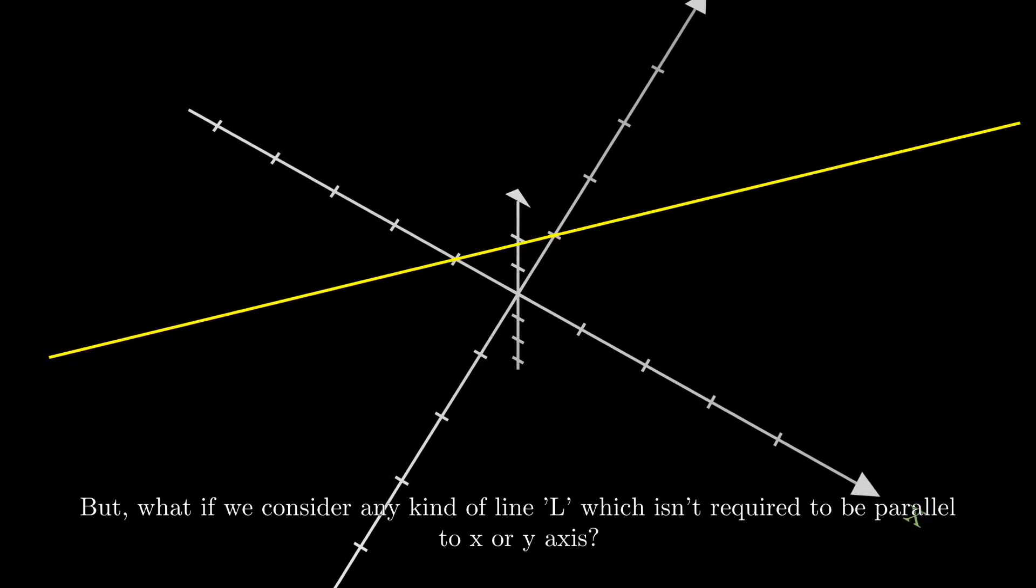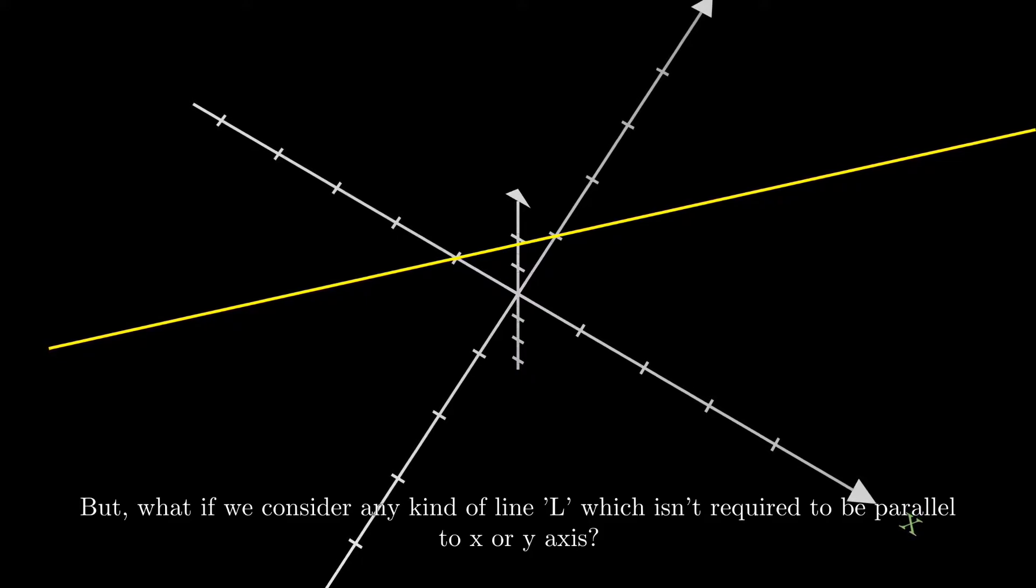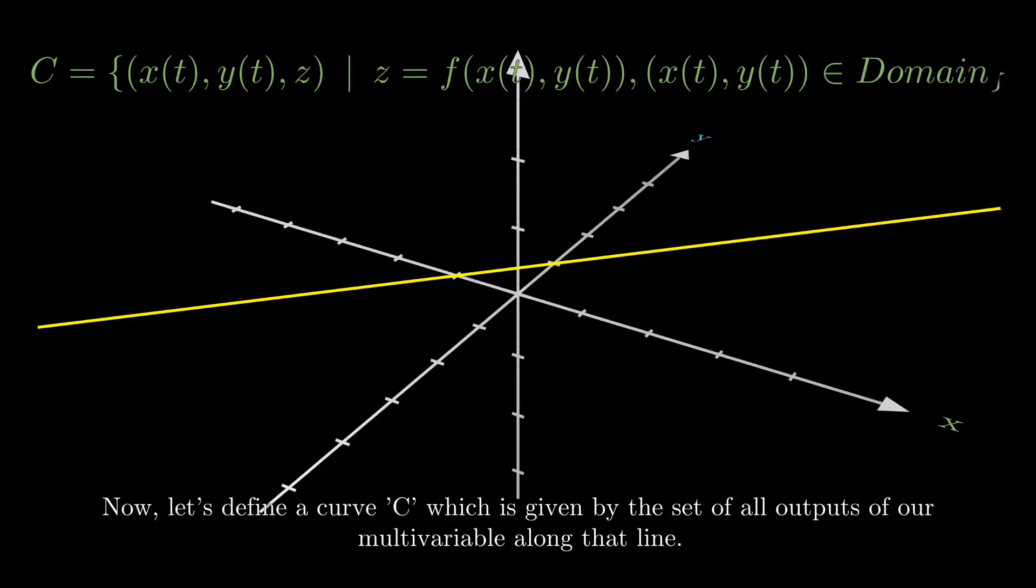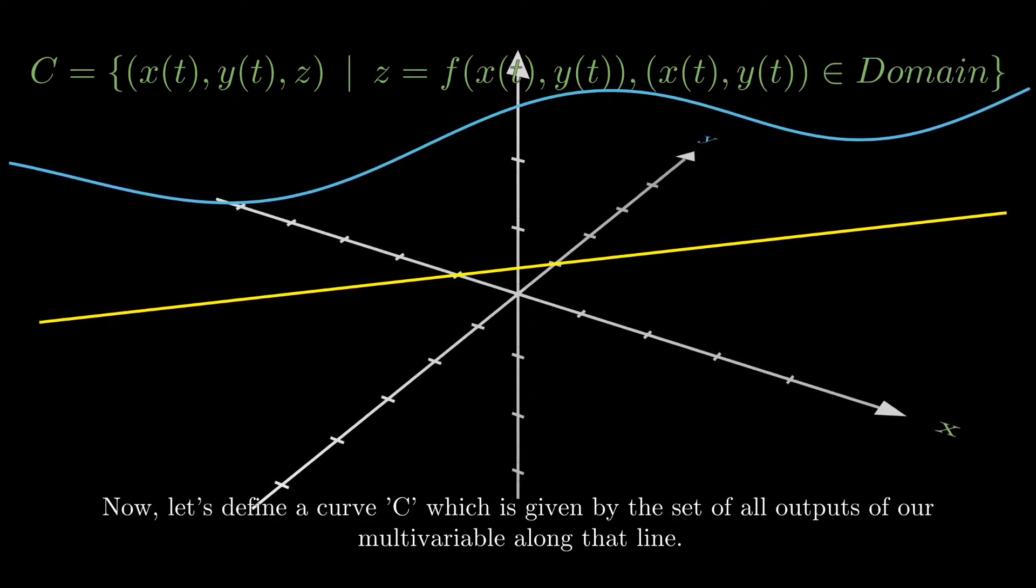But what if we consider any kind of line L that isn't required to be parallel to x or y-axis? Now, let's define a curve C that is given by the set of all outputs of our multi-variable function along that line.